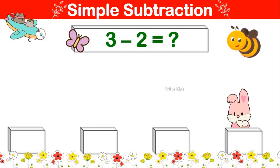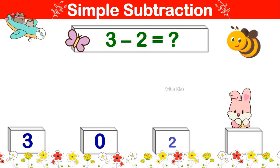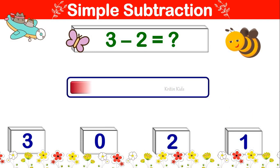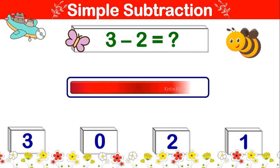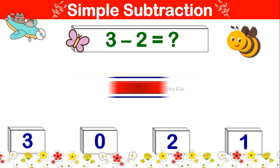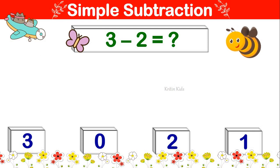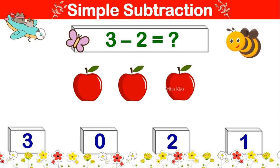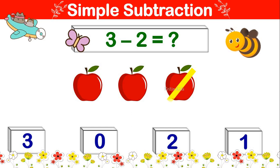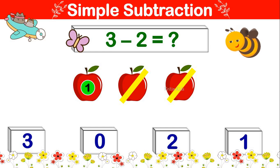3 minus 2 is equal to. Let's take 3 and subtract 2 from it. 1, 2, 3. Now let's subtract 2 from it. 1, 2. Remaining is 1. 3 minus 2 is 1.